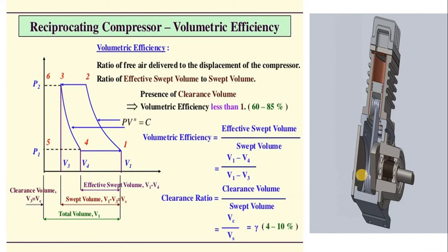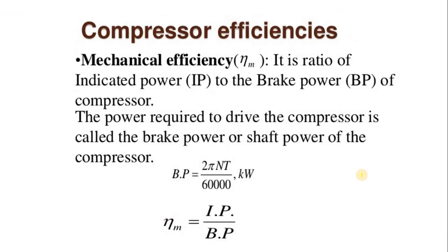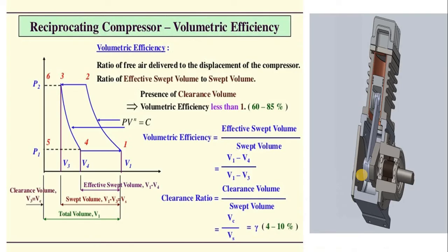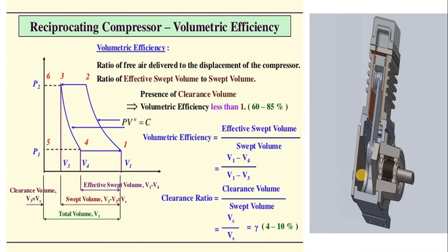These are the two important formulas, very essential while solving numericals of the compressor. Our next lecture will be on numericals on single stage and multistage reciprocating air compressor. We need these basic formulas: first is mechanical efficiency, second is isothermal efficiency, and third is volumetric efficiency. Similarly we need work done for various compression processes: work done for isothermal, work done for isentropic, and work done for polytropic. Generally in our problems we follow isothermal as well as polytropic compression.